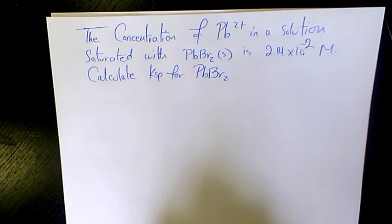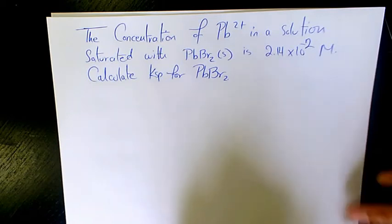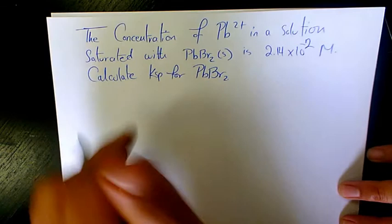In this video I want to show you how to find out the concentration of lead ion in a solution saturated with PbBr2, which is 2.14 times 10 to the power of negative 2 molar. Calculate the Ksp for PbBr2.